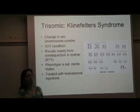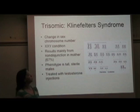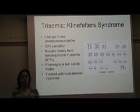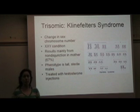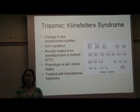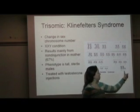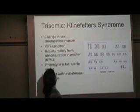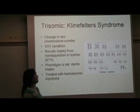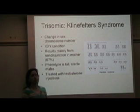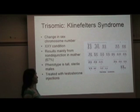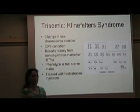Another example of a trisomic condition where an individual has an extra chromosome is called Klinefelter syndrome, and this is an XXY condition. This is a male because he has a Y chromosome, but he also has an additional X chromosome — you can see that here: XXY. Phenotypically, these males are typically tall. They are sterile, however, so they can't reproduce. Again, this can be treated with some testosterone injections.